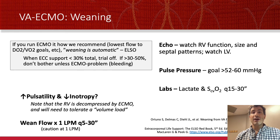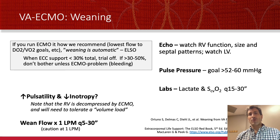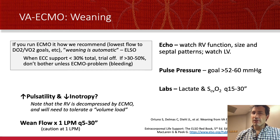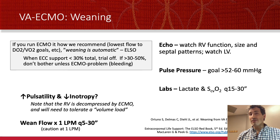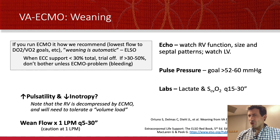Note that the RV is decompressed by ECMO. As you turn down ECMO, you'll need not only pulsatility but also confirmation that the right heart — particularly — can handle the higher blood volume returning to it. You may need to diurese and optimize before weaning ECMO even after noting pulsatility. Then wean flow, but you don't want to go below one liter for very long, as lower flow rates make the patient prone to clotting the circuit.